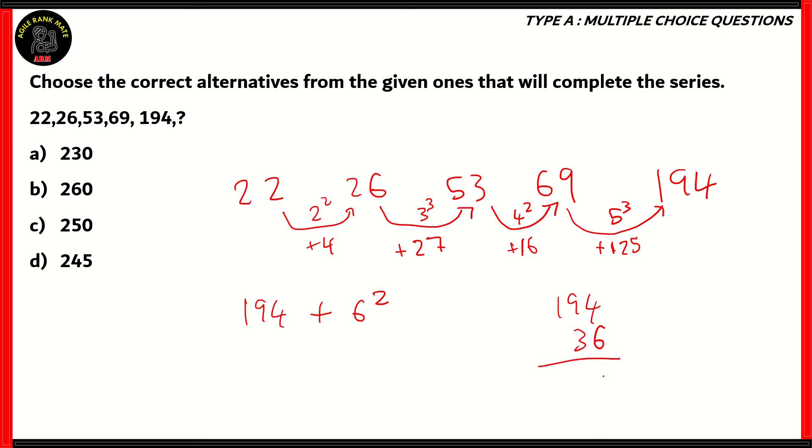6 squared is 36. And when you add that, 4 plus 6 gives you 10, 9 plus 1 is 10, plus 3 is 13, and 1 plus 1 gives you 2. So therefore, the right answer for the correct alternative happens to be option A, 230.